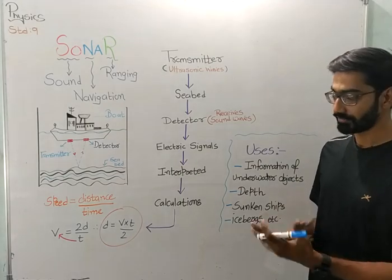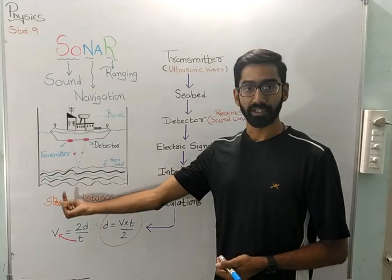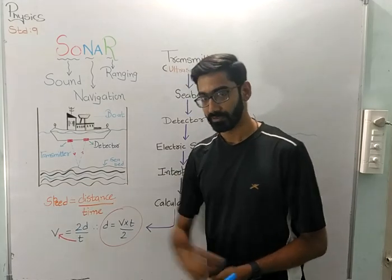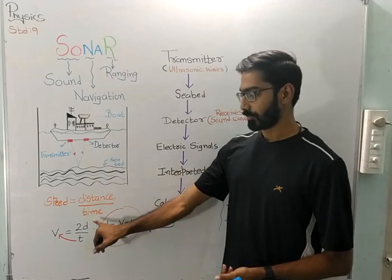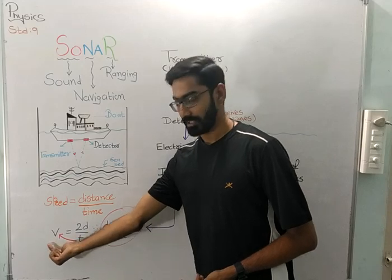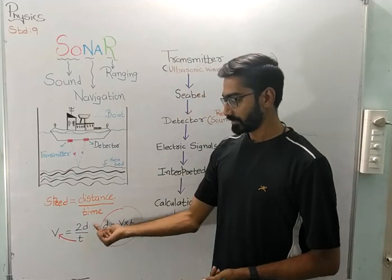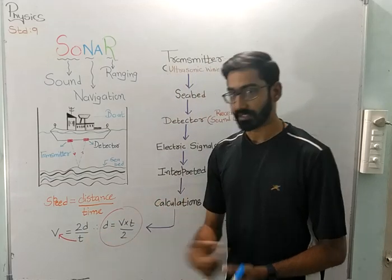Now for calculation, what is the formula? It is a very easy formula. We all have learned about the formula of speed. What is the formula of speed? Speed equals distance upon time. Now if speed is symbolized by V, time by T, and distance by D, the formula becomes V equals 2D by T.